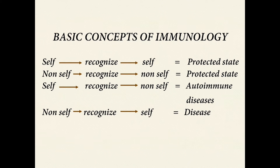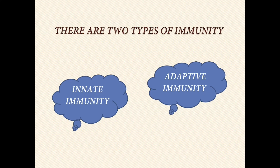Basic concept of immunology: when the immune system recognizes self as self and non-self as non-self, then the body is in a protected state. When the immune system recognizes self as non-self and non-self as self, this condition leads to autoimmune diseases and other diseases respectively. There are two types of immunity: innate and adaptive immunity.